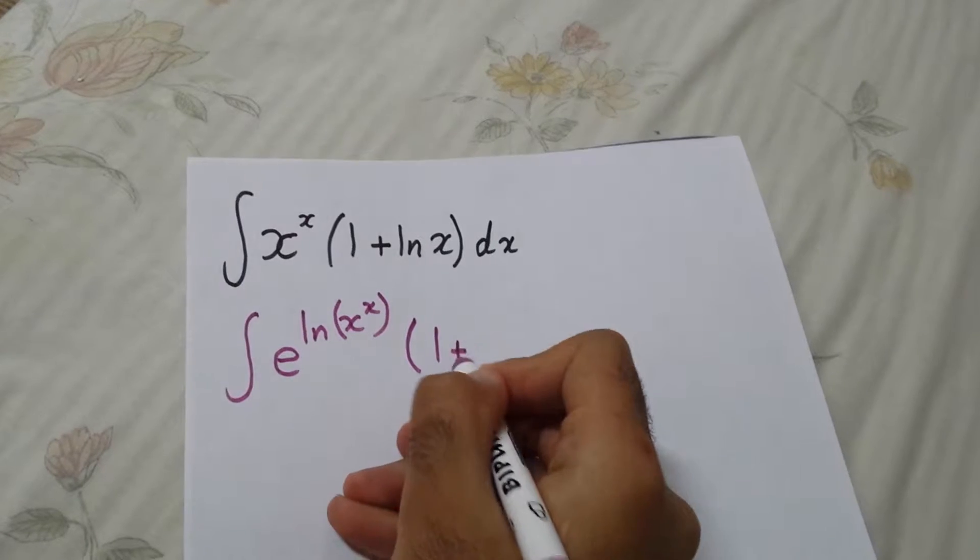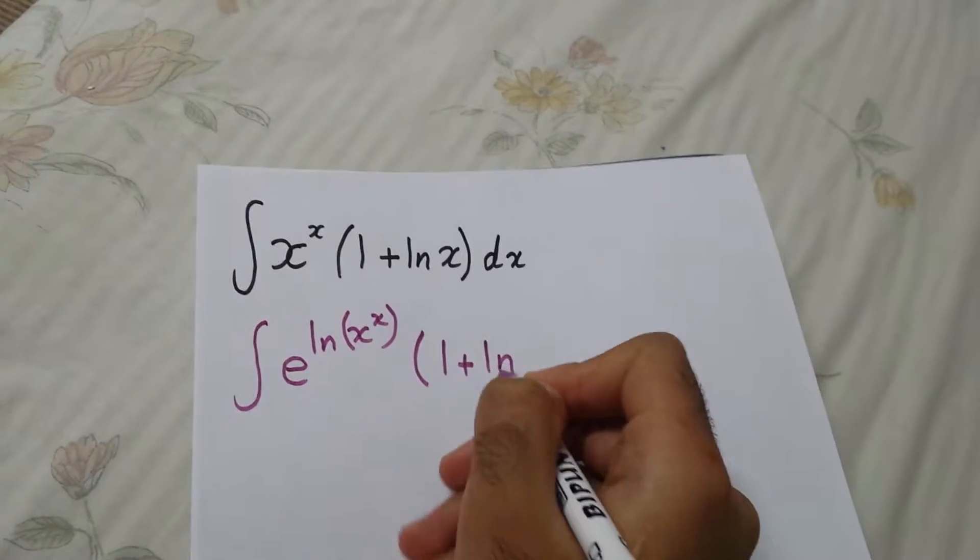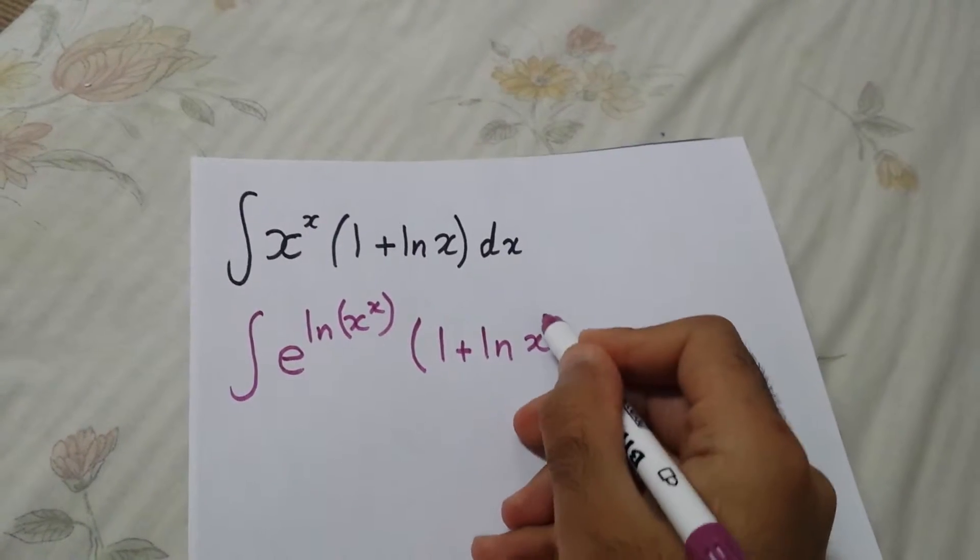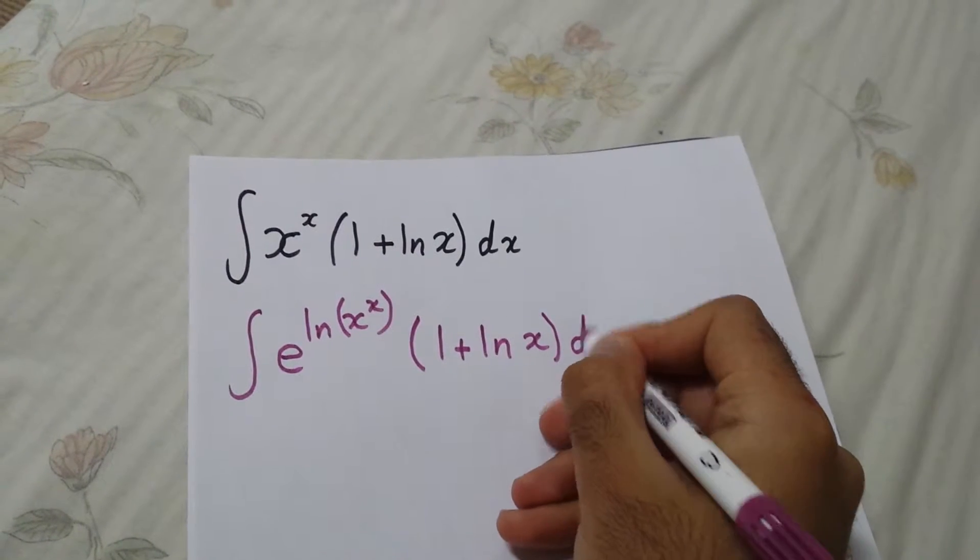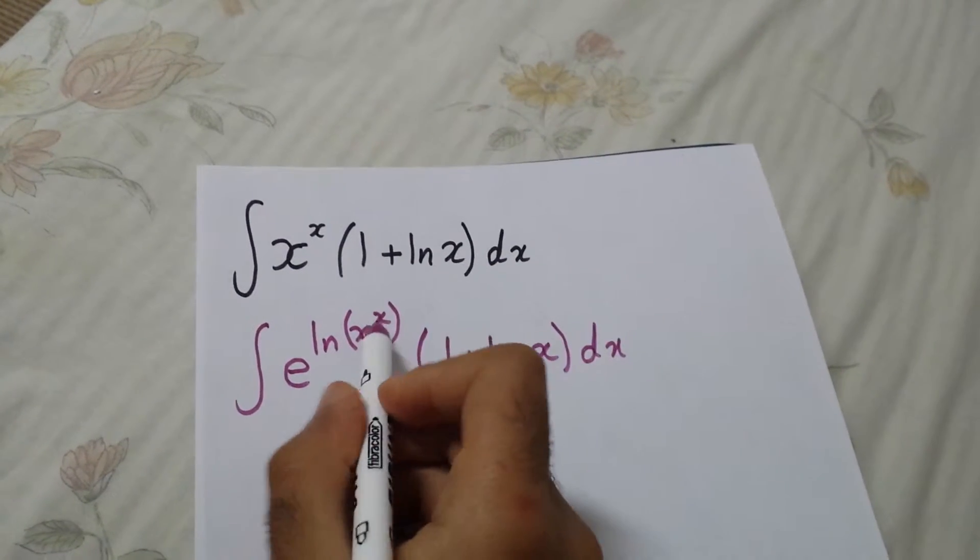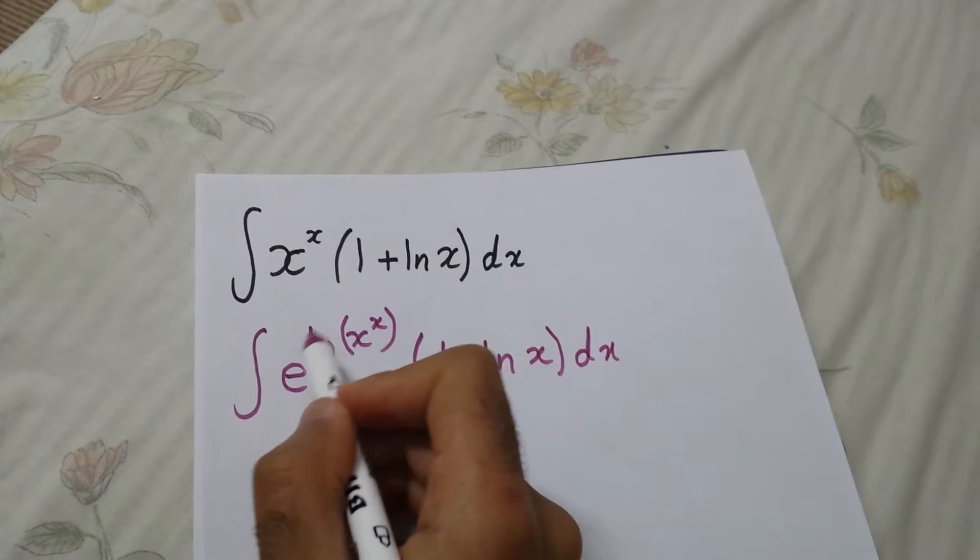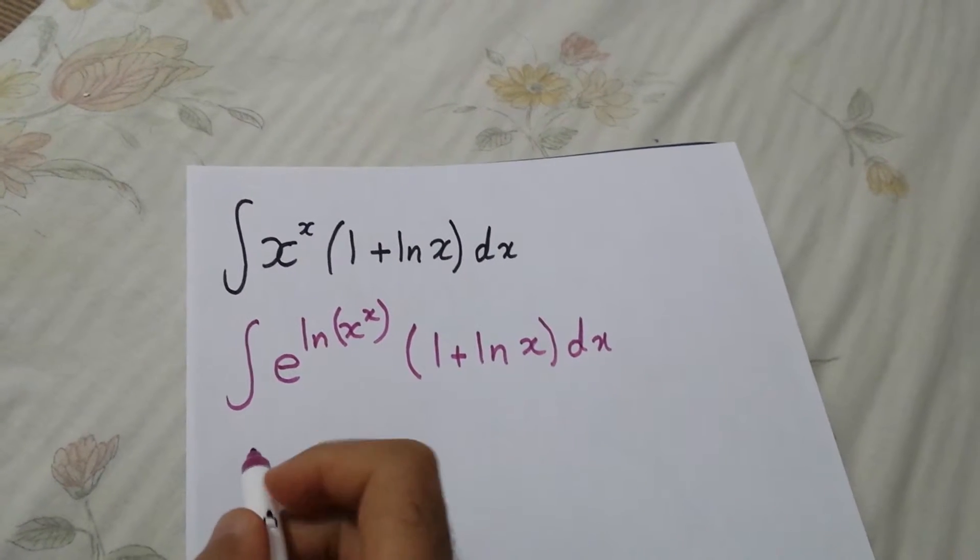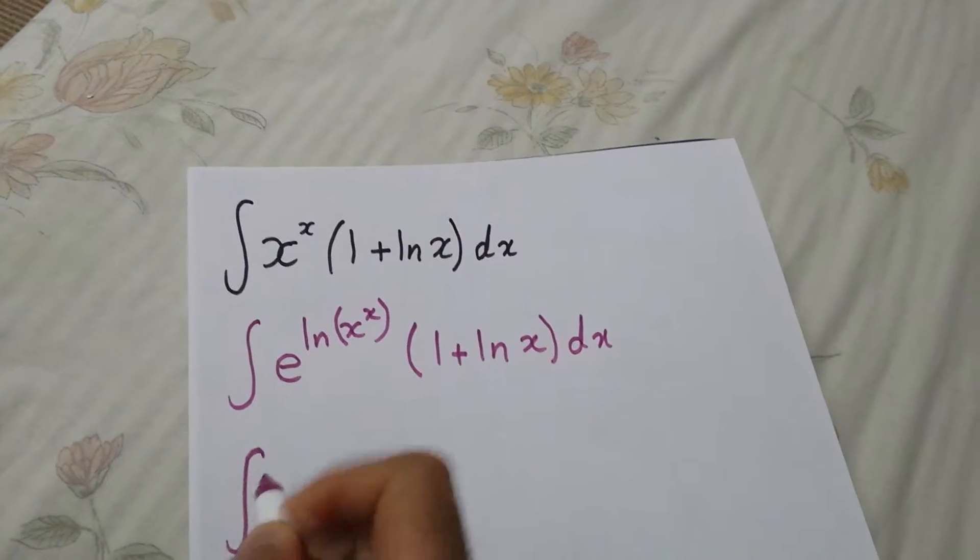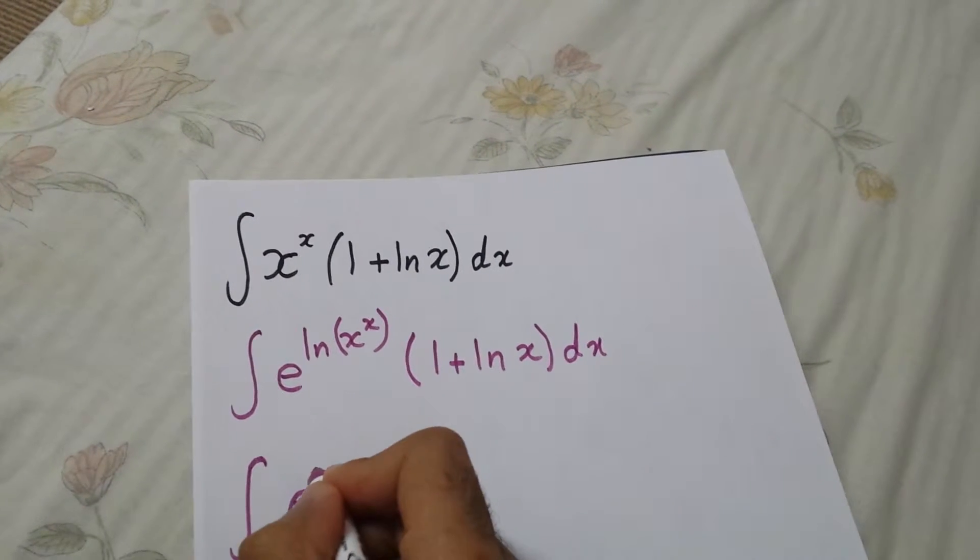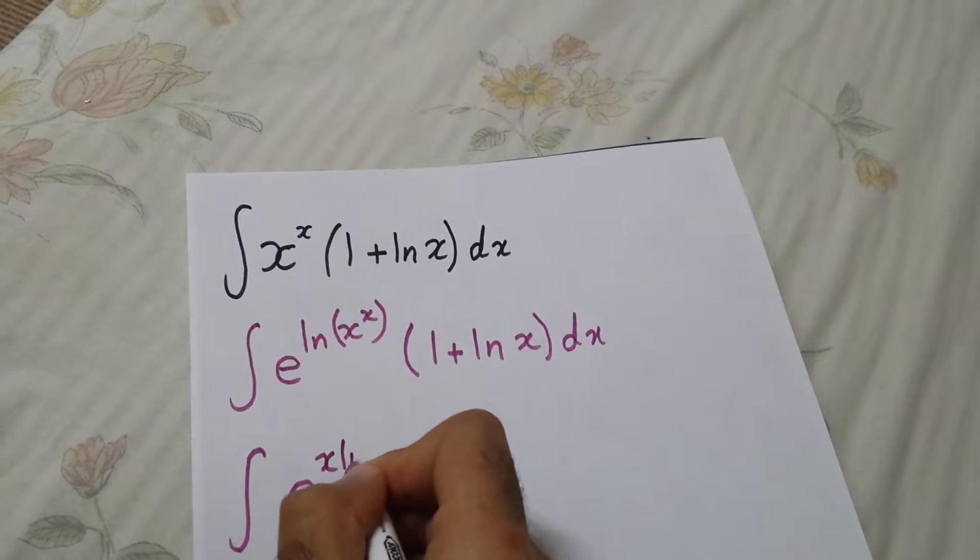Now this will be here, so it will be e to the x ln x, and 1 plus ln x.